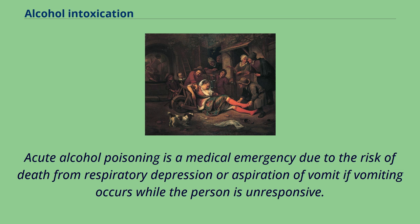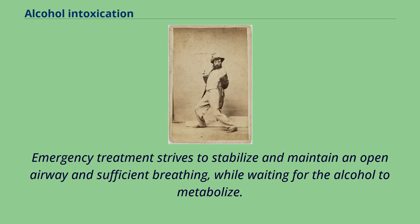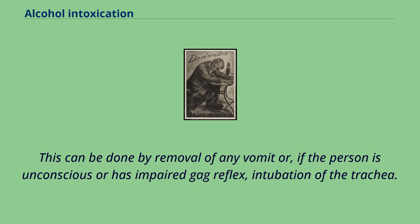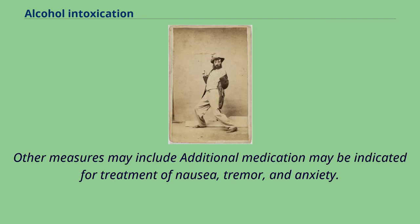Acute alcohol poisoning is a medical emergency due to the risk of death from respiratory depression or aspiration of vomit if vomiting occurs while the person is unresponsive. Emergency treatment strives to stabilize and maintain an open airway and sufficient breathing while waiting for the alcohol to metabolize. This can be done by removal of any vomit or, if the person is unconscious or has impaired gag reflex, intubation of the trachea. Other measures may include additional medication for treatment of nausea, tremor, and anxiety.